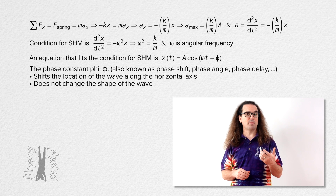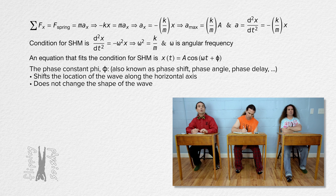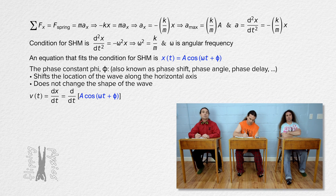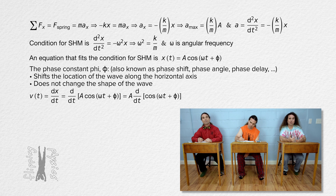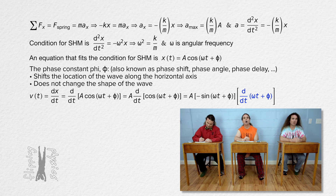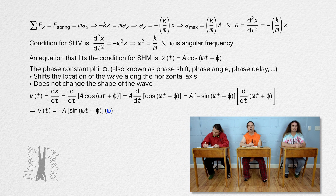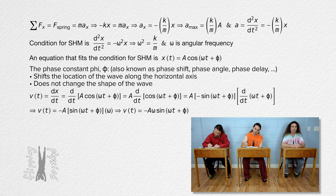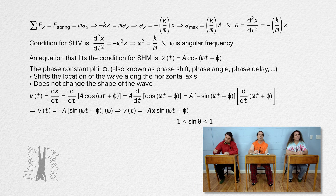Please determine the velocity of an object in simple harmonic motion using the position equation. Velocity equals the derivative of position with respect to time, so the derivative of the position equation with respect to time. Amplitude is constant so that comes out of the derivative. Using the chain rule, the derivative of cosine is negative sine of the same quantity, and the derivative with respect to time of angular frequency times time plus phi is just the angular frequency. So velocity equals negative amplitude times angular frequency times the sine of the quantity angular frequency times time plus phi. The maximum velocity equals amplitude times angular frequency, since the value of sine theta has a maximum of positive one.